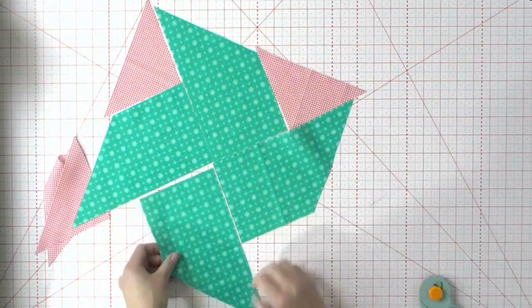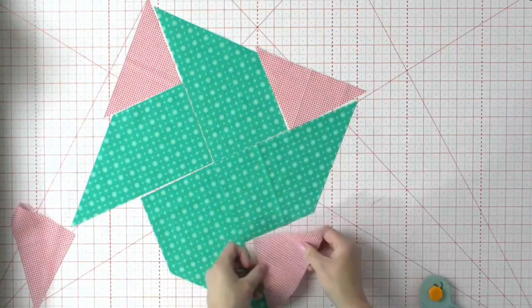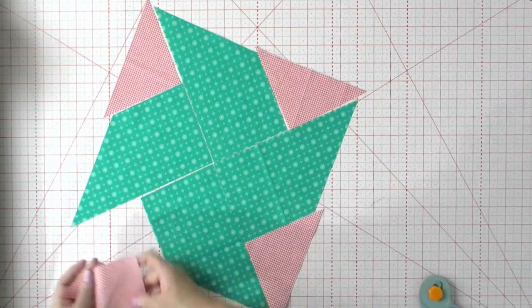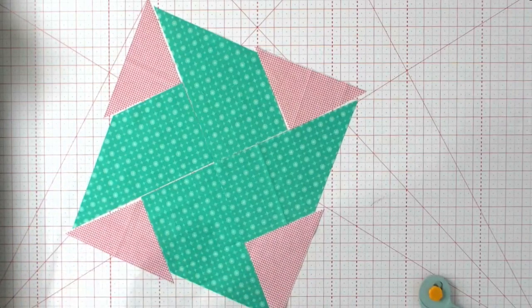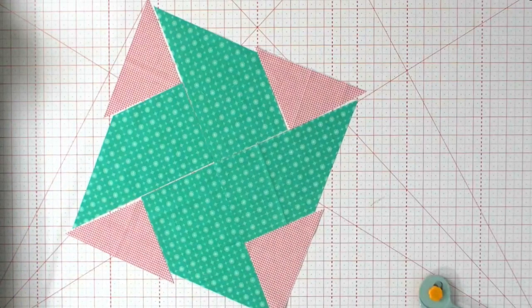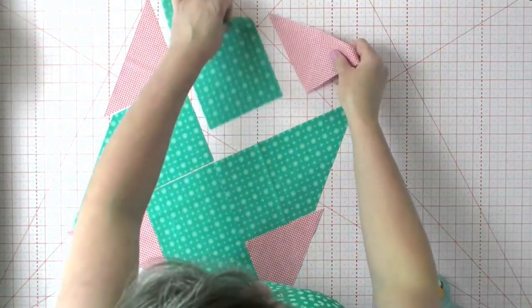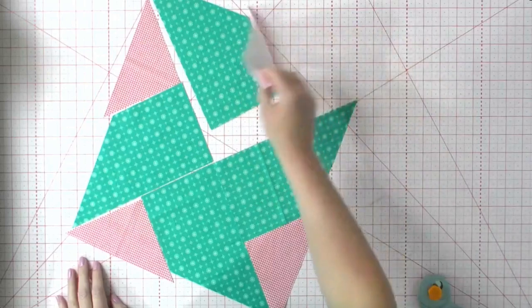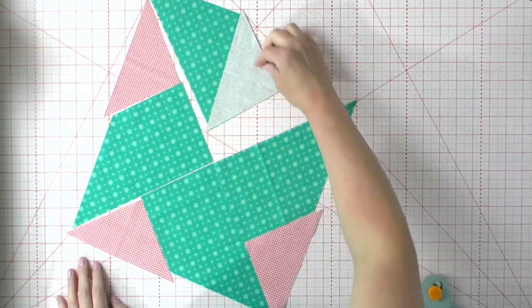So you can see how it kind of makes a pinwheel in the middle. And once we have these blocks put together, all four sides, then it'll be easier to put them together. But I just wanted to show you this is what it's going to look like. Isn't that cool? All right, so I'm going to go piece these together. We're going to just sew all of these triangles to the edges of these rectangles that we chopped off.